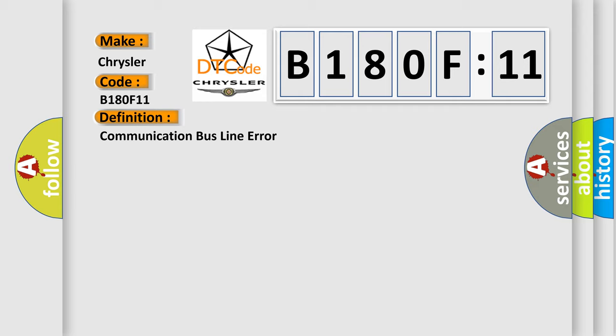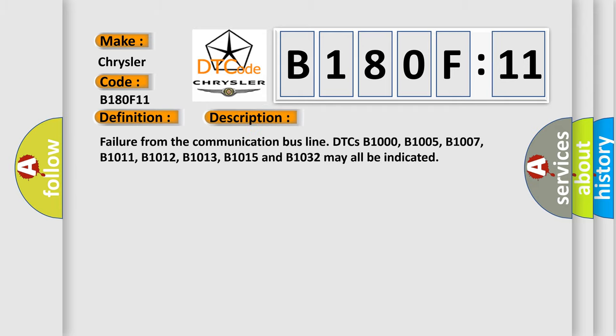Short to ground: this subtype is used for failures where the control module measures ground battery negative potential for greater than a specified time period or when some other value is expected.